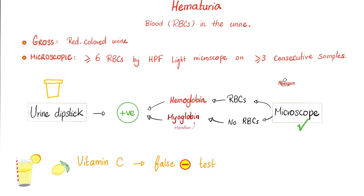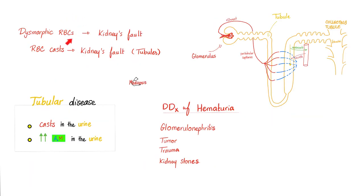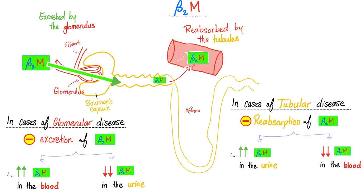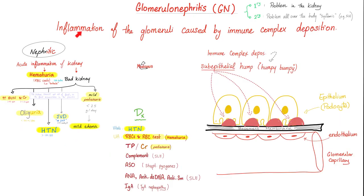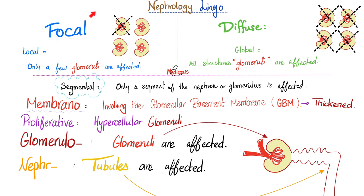Dysmorphic red blood cells in the urine — blame the kidney, specifically the glomerulus. Red blood cell casts — blame the kidney, specifically the tubules. A better way to differentiate glomerular from tubular disease is beta-2 microglobulin. Glomerulonephritis is inflammation of the glomeruli caused by immune complex deposition. If you remember post-streptococcal glomerulonephritis, we had subepithelial deposition. But in IgA nephropathy, we have intramesangial immune complex deposition.